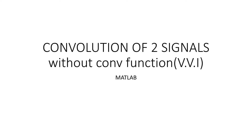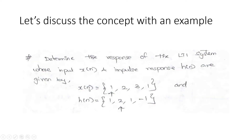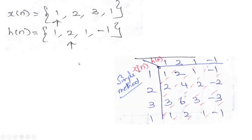In my previous video I discussed how you can perform convolution of two signals without using the conv function in discrete domain in MATLAB, which is an important lab experiment for digital signal processing. As a quick recap, we took two sequences: x(n) = [1, 2, 3, 1] starting from n=0, and h(n) = [1, 2, 1, -1] starting from n=-1, since the arrow shows n=0 corresponds to amplitude 2, meaning n=-1 has amplitude 1.